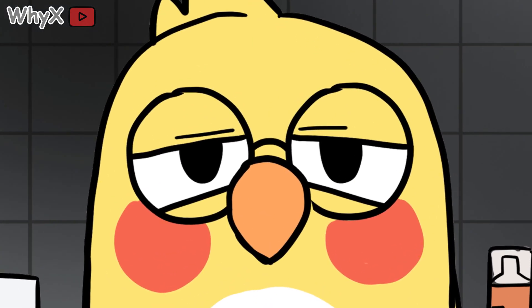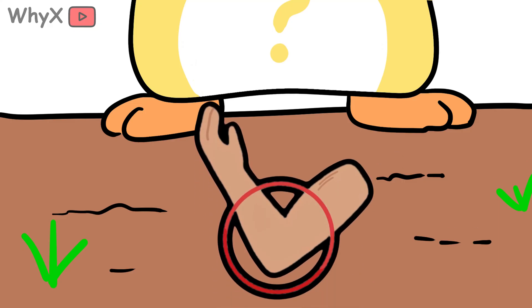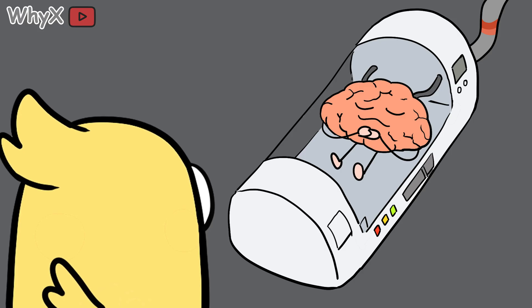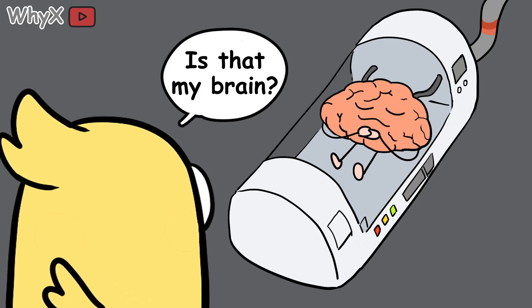Inside every cell of your body, whether it's in your eye, your toe, or the little patch of skin on your elbow, there's a microscopic library containing the full instruction manual for making you.